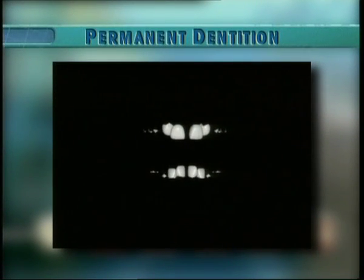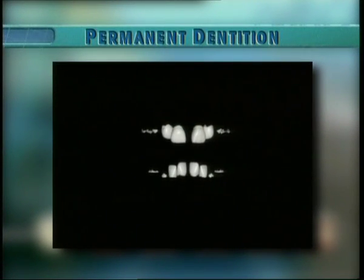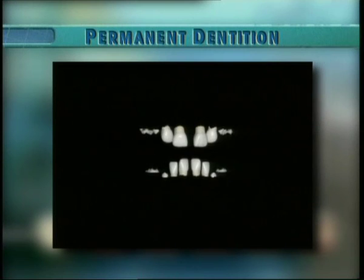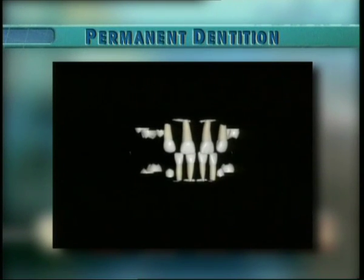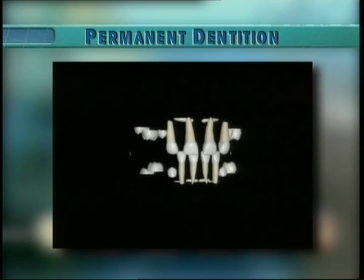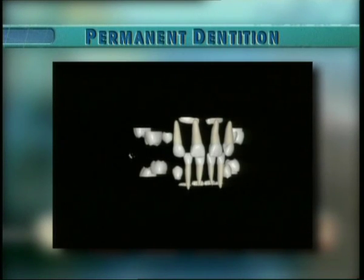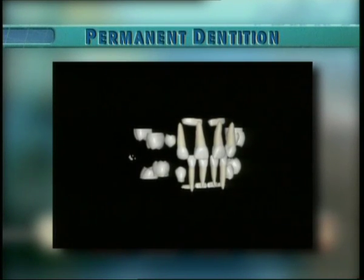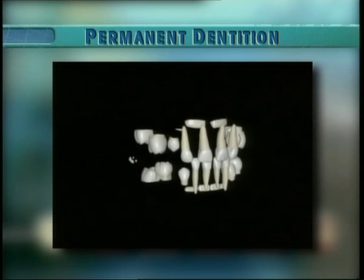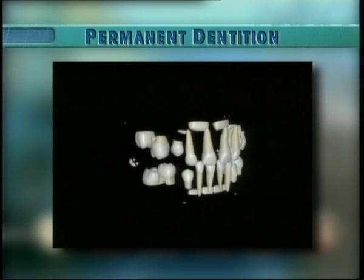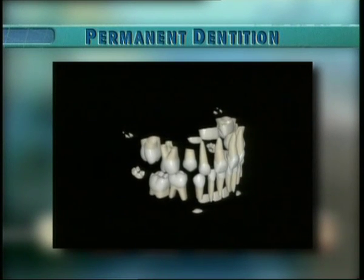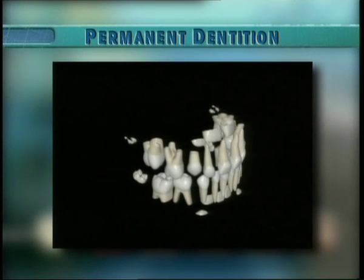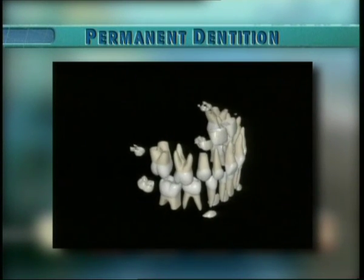The development of the dentition is complex, as this overview shows. A difference exists in the increase in crown size between the anterior teeth and the molars. In addition, jaw growth varies — jaw growth is sufficient to allow for the elimination of the overlap and rotations of the deciduous incisors prior to emergence.